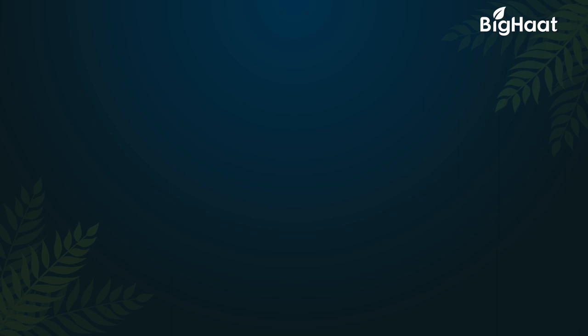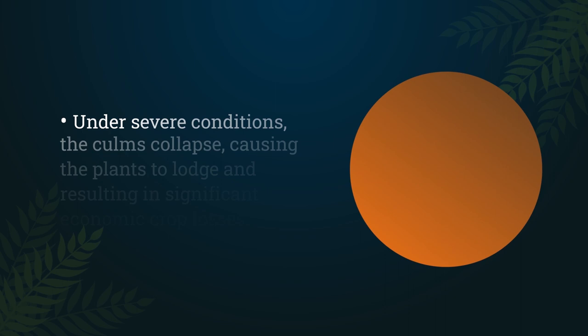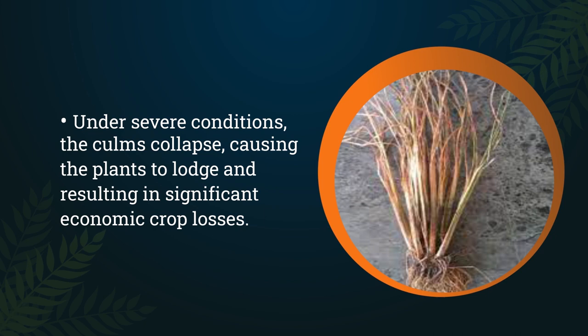The infected tissues rot and black fungal masses appear on the rotting tissues. Under severe conditions, the culms collapse, causing the plant to lodge and resulting in significant economic crop losses.